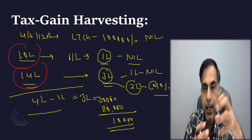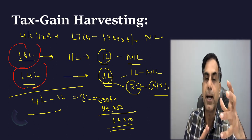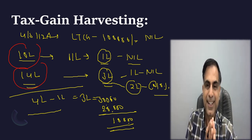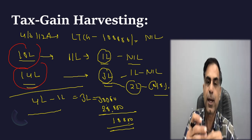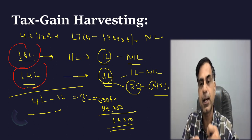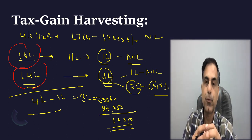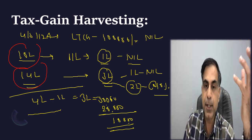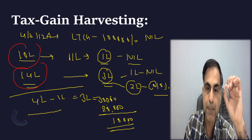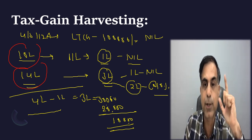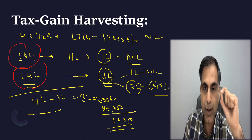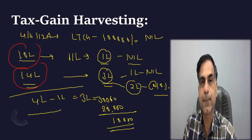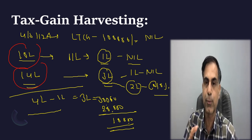Technically, the term 'harvesting' means there is a crop whose benefit you are deriving today. Here, whenever there is a loss or profit arising in between which you don't ultimately want to book, you book such loss or profit just for the sake of minimizing your tax liability. This is the interpretation of tax gain harvesting.